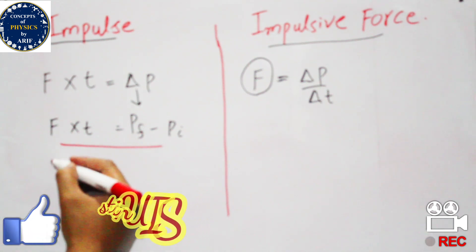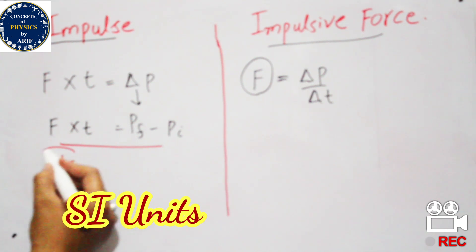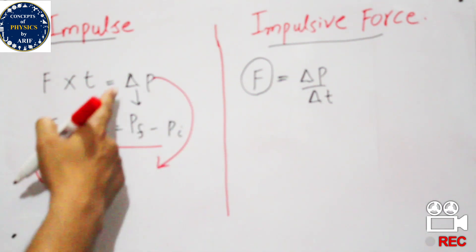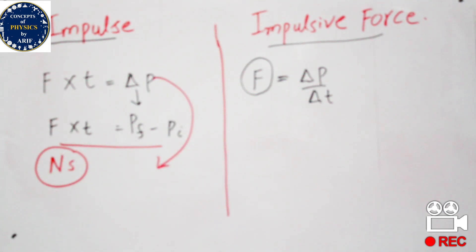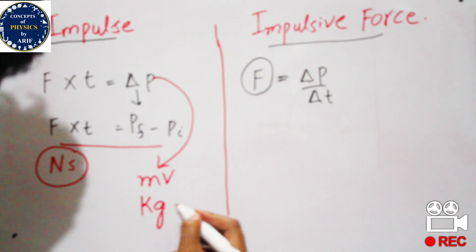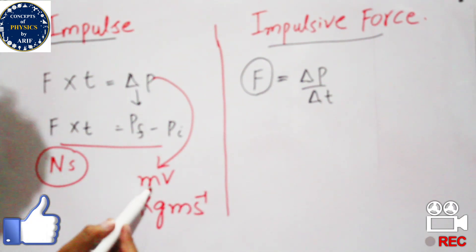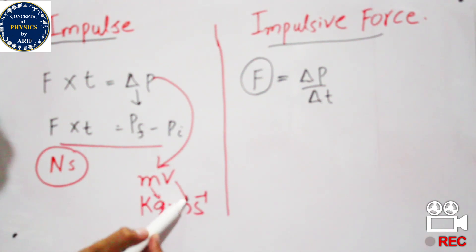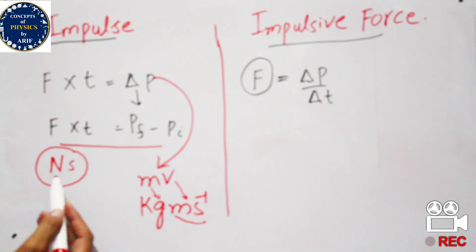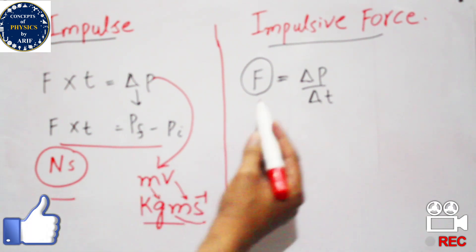We know that force has a unit of Newton and time has a unit of second, so the SI unit of impulse is Newton-second. If we calculate using change in momentum, momentum equals mv, so its unit is kilogram meter per second. Both units — Newton-second and kilogram meter per second — are equivalent.